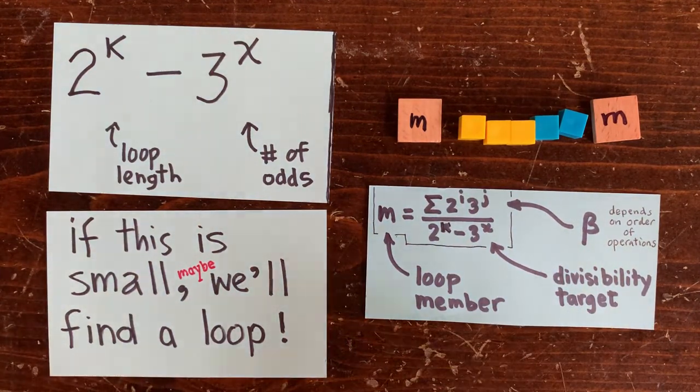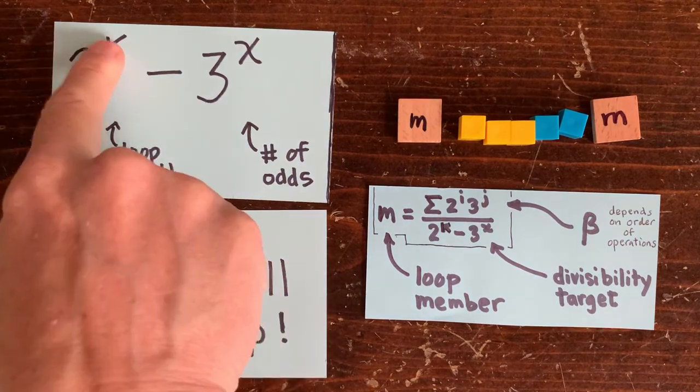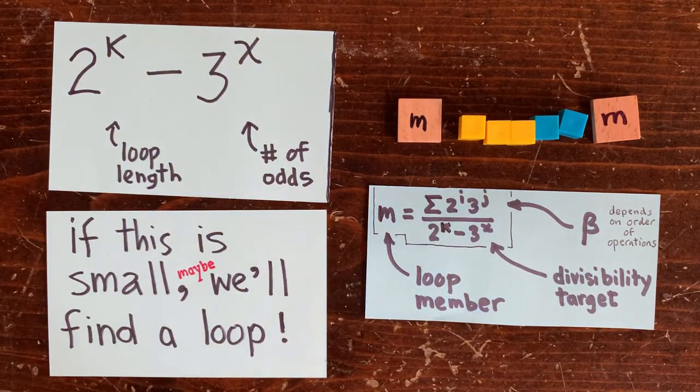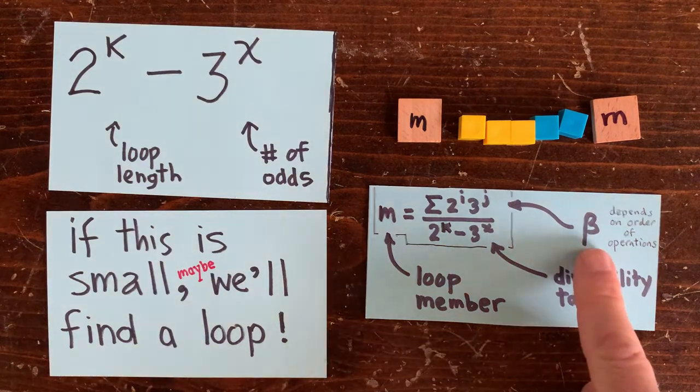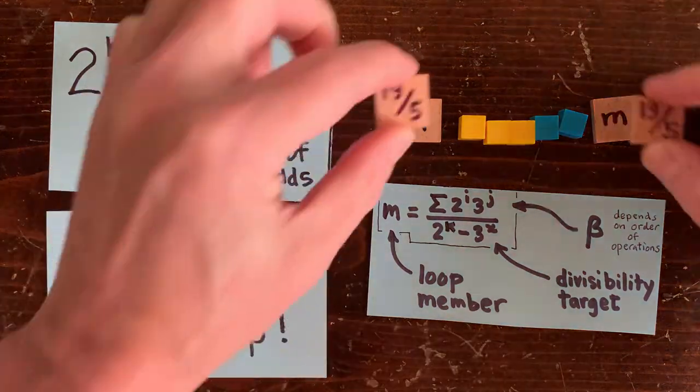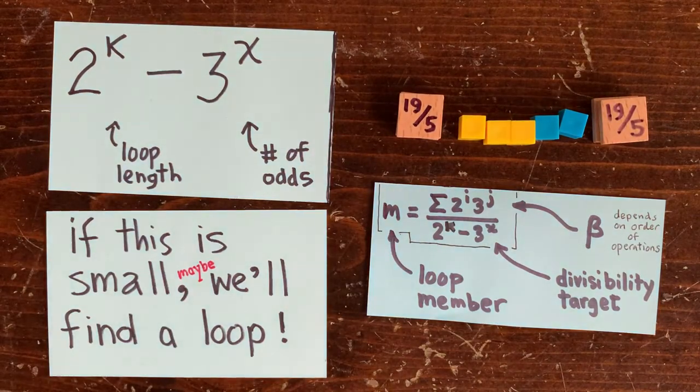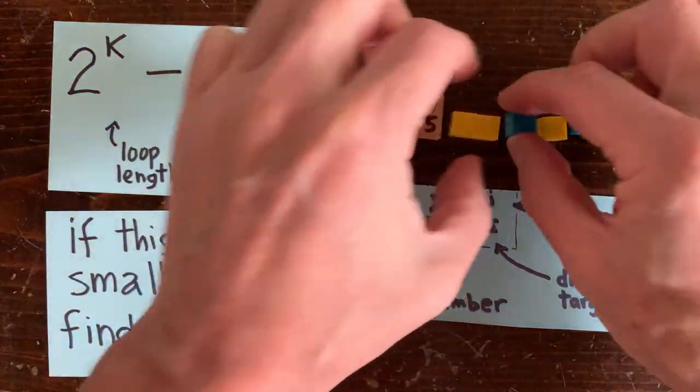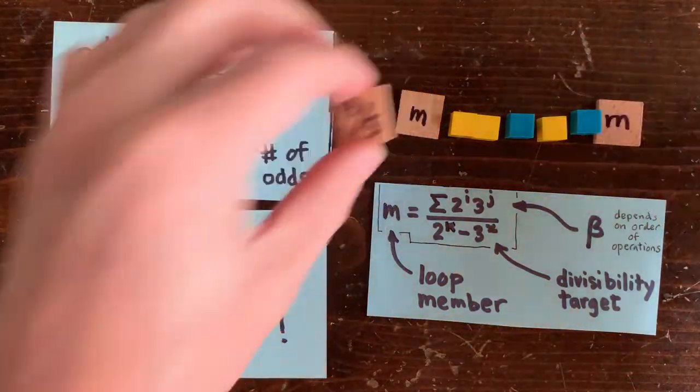In this case, 2 to the 5th is 32 minus 3 cubed is 27, so the denominator is 5. And a random number has a pretty good 1 in 5 chance of dividing evenly. But in this case, m equals 19 over 5. And we can reshuffle the operations and try again, but in this case, we won't have any luck.